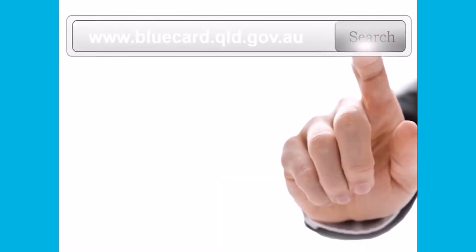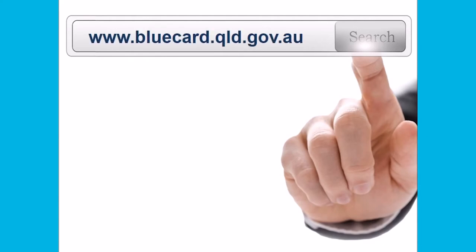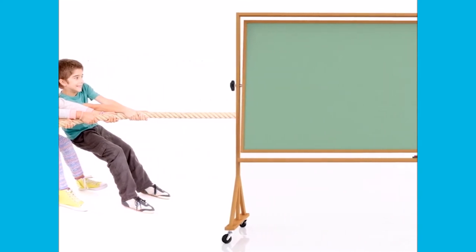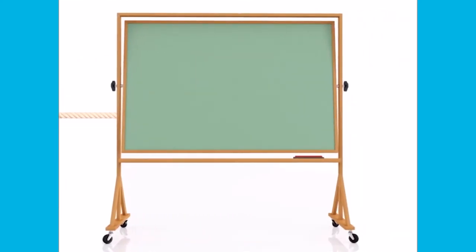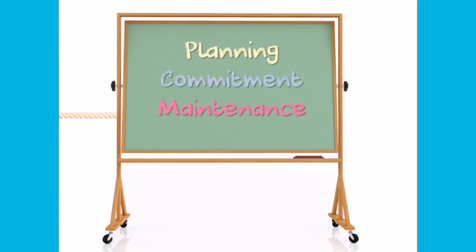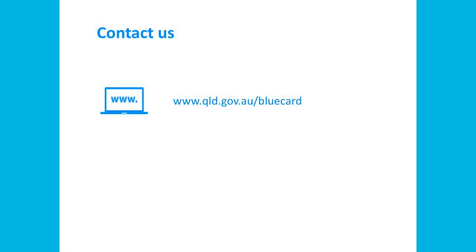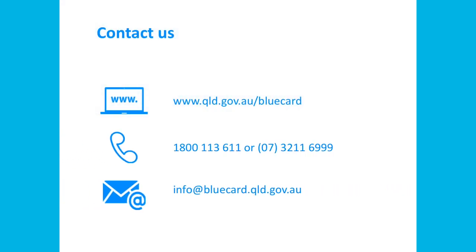To further assist you in developing and implementing effective child and youth risk management strategies, a toolkit which is available on the risk management page of the Blue Card Services website has been developed to provide information and guidance on the eight minimum requirements. Remember, safe service environments don't just happen — they require ongoing planning, commitment and maintenance. Thank you for taking the time to learn about this requirement of child and youth risk management strategies. We hope you found this video useful and we encourage you to watch the remaining videos on offer from the Blue Card Services Learning Portal.